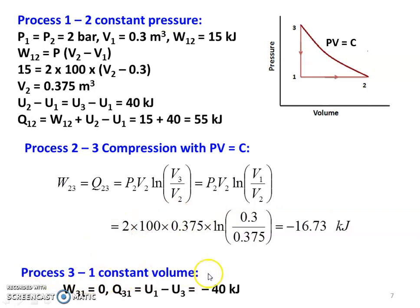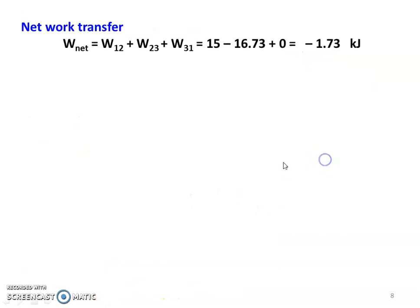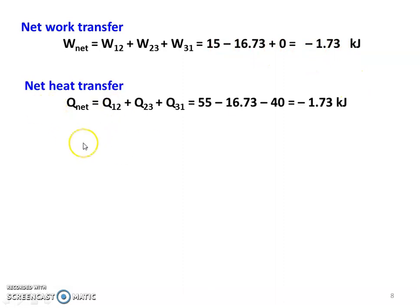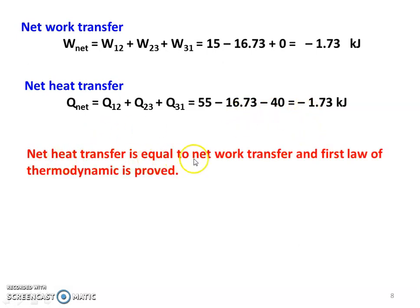For process 3 to 1, constant volume process, W31 equal to 0. Q31 equal to U1 minus U3 equal to minus 40 kilojoules. Net work transfer W12 plus W23 plus W31 equals 15 minus 16.73 plus 0 equals minus 1.73 kilojoules. Net heat transfer Q12 plus Q23 plus Q31 equals 55 minus 16.73 minus 40 equals minus 1.73 kilojoules. Net heat transfer equals net work transfer, and the first law of thermodynamics is proved.